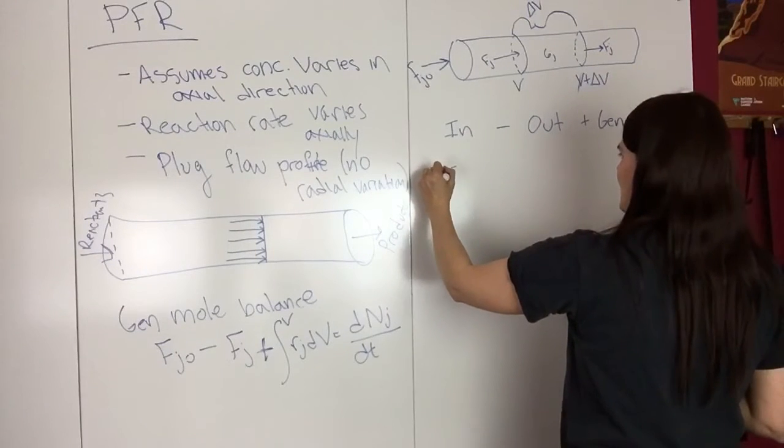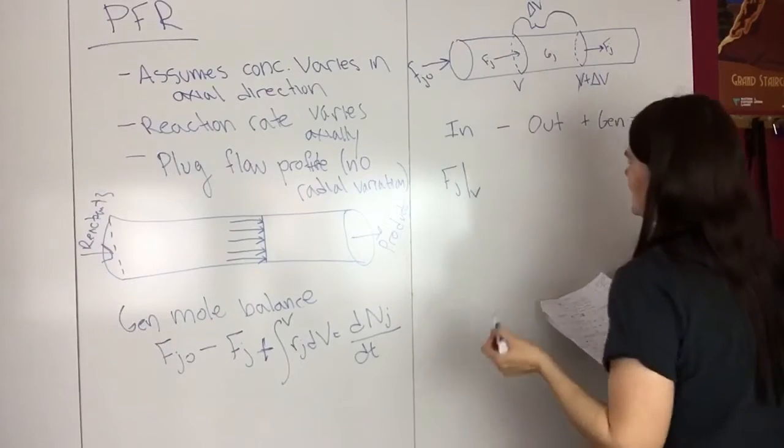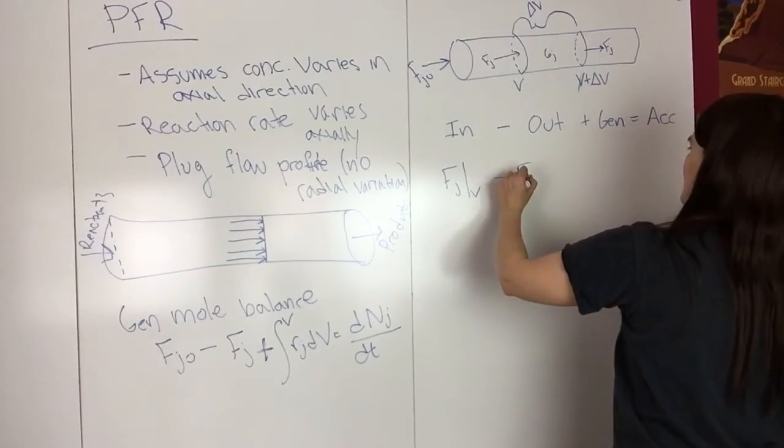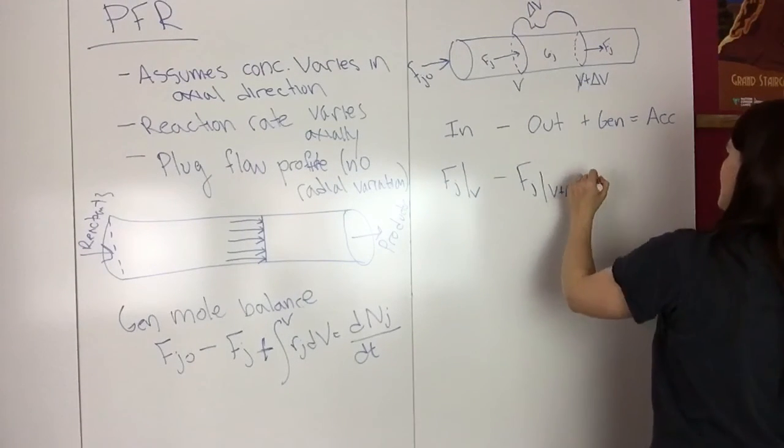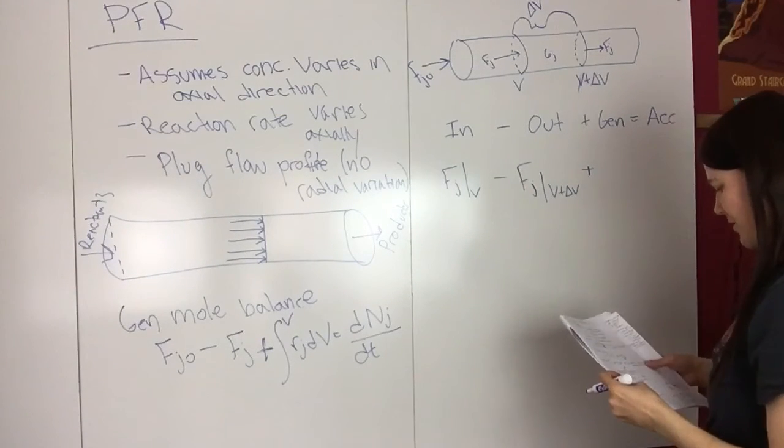Going in, we have F_J at V, minus F_J at V plus delta V, plus the generation term.